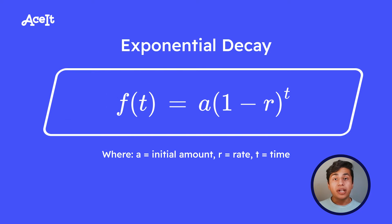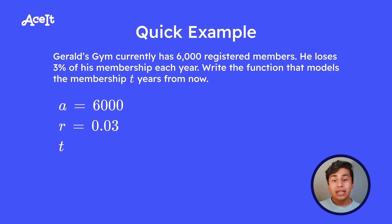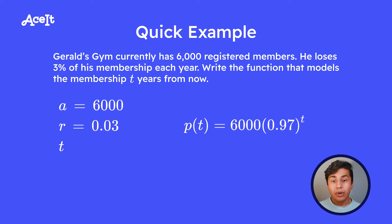Next up we have the opposite of exponential growth, which is exponential decay. The equation is pretty much the same, but instead of adding the rate to 1, we subtract the rate from 1. Let's jump straight into an example. Gerald's gym currently has 6,000 registered members, but he's losing 3% of his membership every year. Write the function that models the membership t years from now. Our A is 6,000 and our rate is 0.03, so we get 6,000 times 0.97 to the power of t — that's the function that models how many members he has in year t.